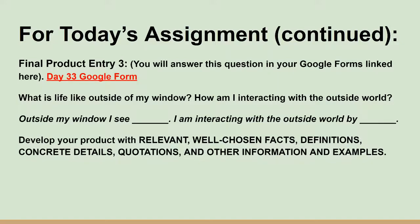The next slide is the last one. For today's assignment, your final product entry three, you're going to answer this question in your Google Forms, which are linked right here in red. You're thinking about: what is life like outside my window? How am I interacting with the outside world? Your answer might say: outside my window, I see blank. I'm interacting with the outside world by blank. Remember, develop your final product with relevant, well-chosen facts, definitions, concrete details, quotations, and other information and examples. I'm not actually going to fill it out — I'm just going to show you exactly how you would fill it out.